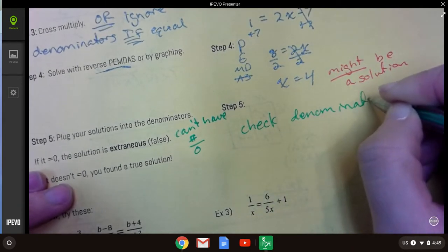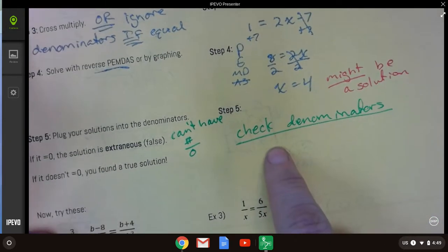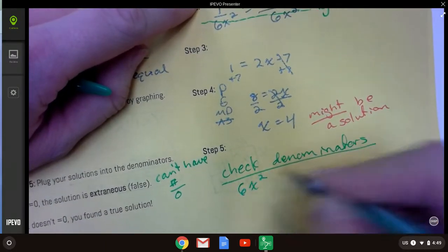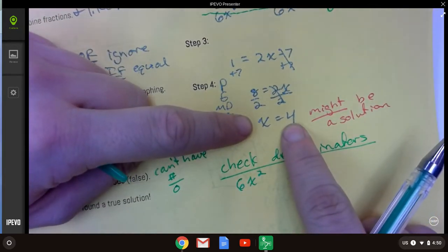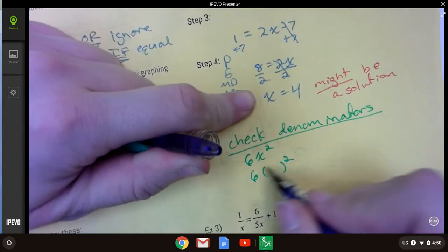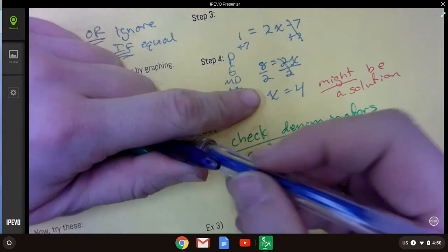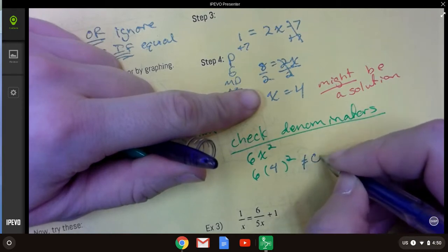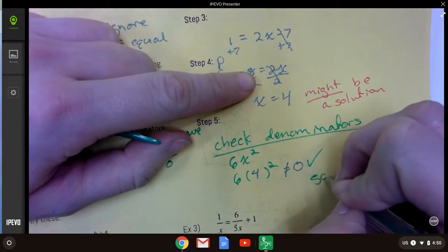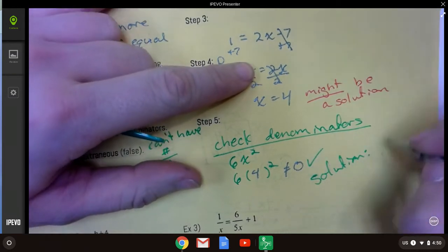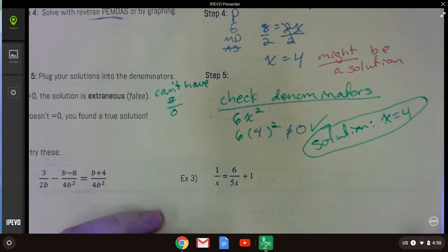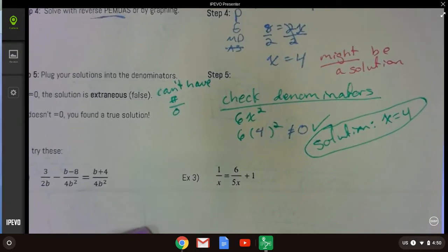So, check denominator. Luckily for us, we have only one denominator to check. They're all the same. They're all 6x squared. So, what I'm going to do is take our proposed solution and stick it in for x and just see what I get. So, instead of 6x squared, I'm going to do 6 times 4 squared, which gives me something that's not 0, which is all I care about. I don't really care what it is. I just want to know that it's not 0. So, that means our solution is x equals 4. Yay! We did. Okay. It's a lot of steps. So, let's try a couple more.